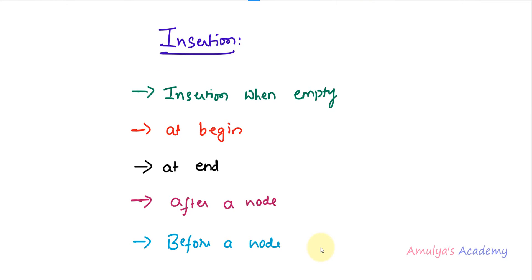While writing the program for singly linked list we wrote five methods for insertion operation: how to insert a node when linked list is empty, how to insert a node at the beginning, how to insert a node at the end, how to insert a node after a given node, and how to insert a new node before a given node. Here in the doubly linked list program also we will write these five methods. Today we will discuss about the first three methods and the remaining two in the next tutorial.